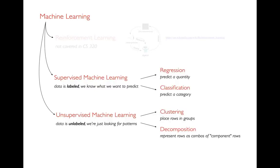Within supervised machine learning, there are two things we'll learn this semester: regression, where we're trying to predict a quantity, and classification, where we're trying to predict a category. In any case where we're trying to predict something, that's known as a supervised problem — the data has some labels on it, usually a special column telling us a quantity like house price or some category, and from that we predict that label when it's unknown. In unsupervised learning, there is no special label column; we're just looking for general patterns in the data.